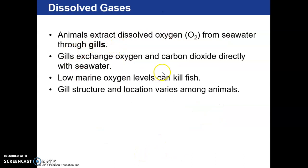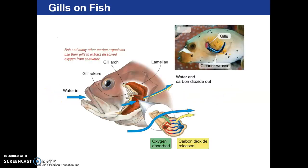Fish have gills that exchange oxygen and carbon dioxide directly with seawater — they can extract dissolved oxygen directly from the water, which is why they don't need to surface to breathe. This is also why dead zones are a huge issue for them: the dissolved oxygen is being absorbed by everything else, and fish are unable to take it in even though there's plenty of water. If you're studying a fish, you'll want to include information on their gill system.